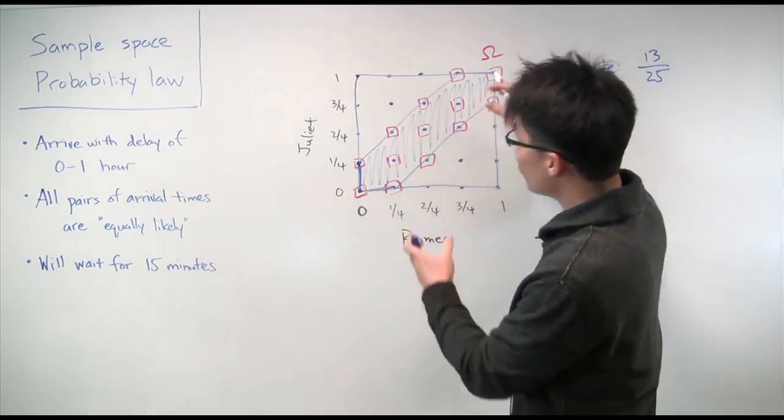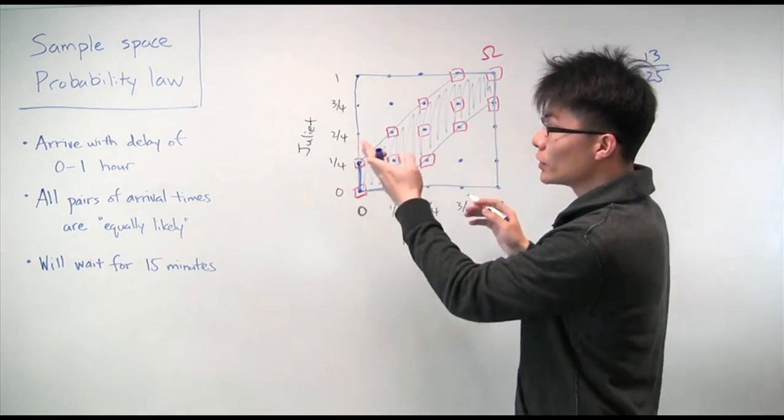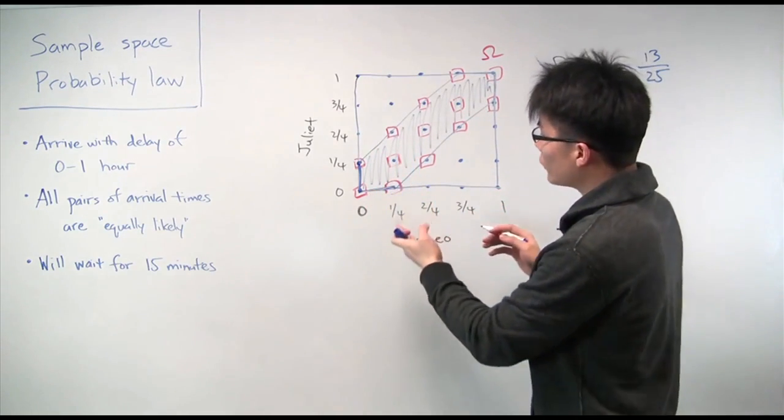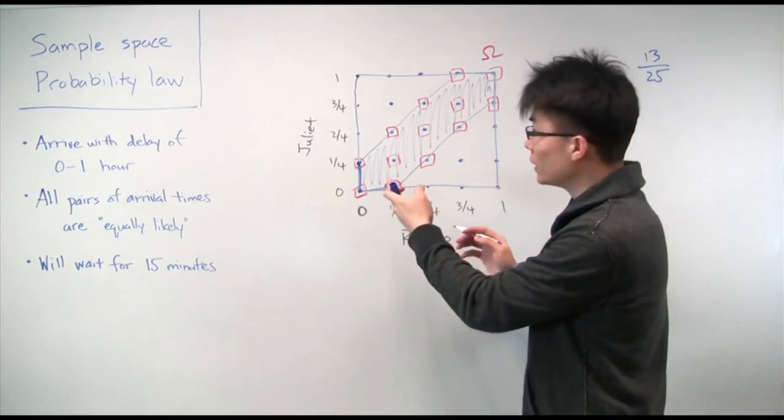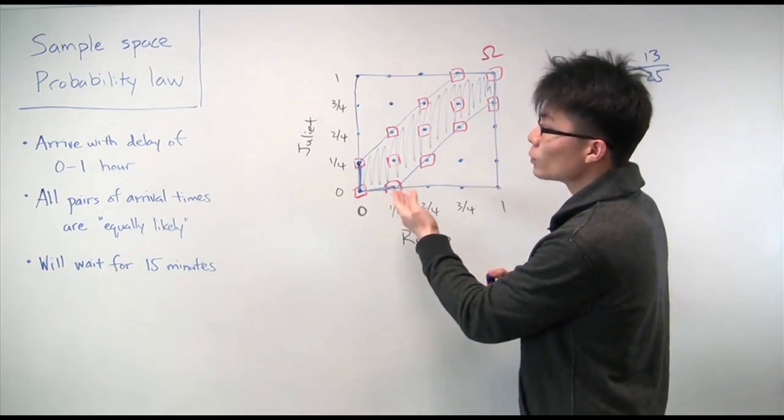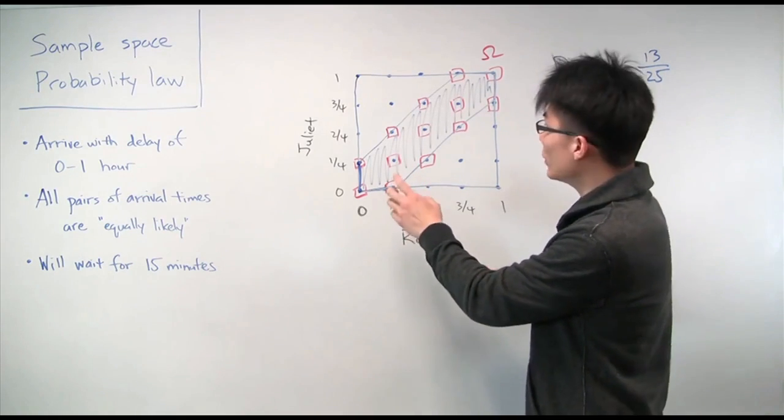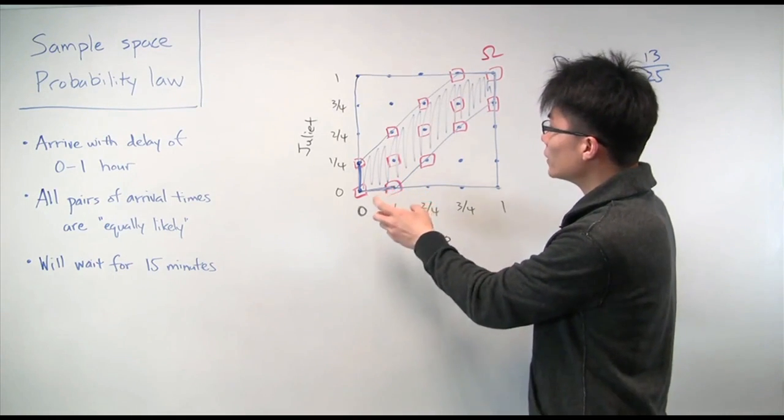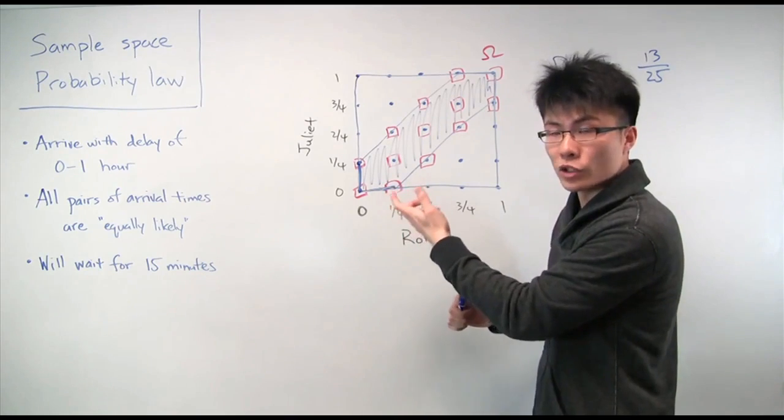So now we have our event of interest. We have our sample space and our probability law. So all we have to do now is just calculate what this probability is. And we've already said that the probability in this probability law is just areas. So now it actually just boils down to not a probability problem, but a problem in geometry.